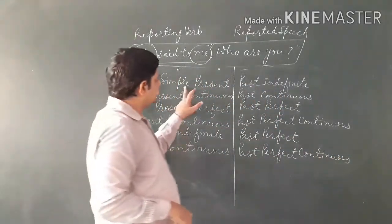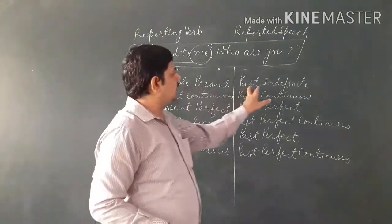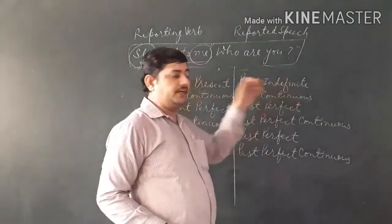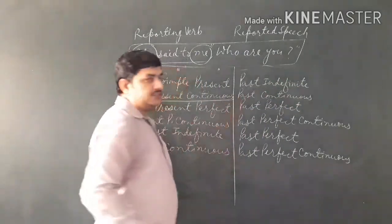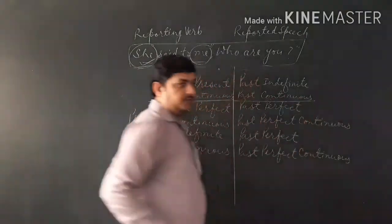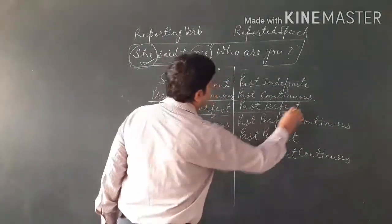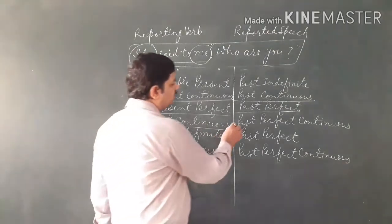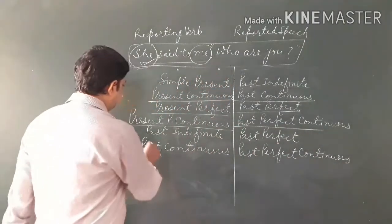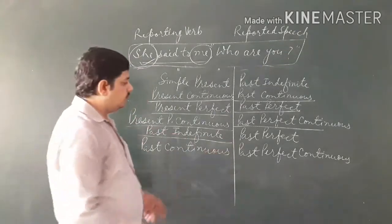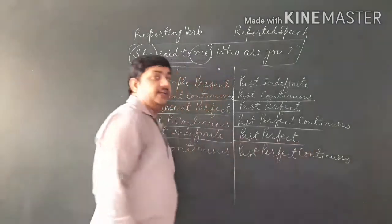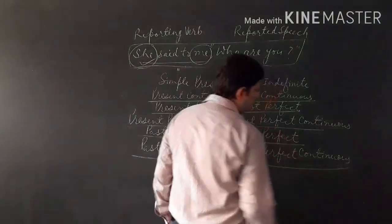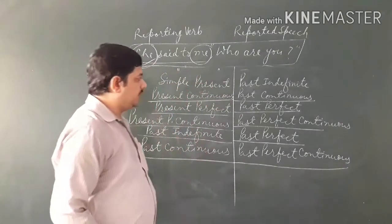So quickly: simple present converts to past form (second form). Present continuous converts to past continuous. Present perfect — 'has/have' — converts to past perfect — 'had'. Simple past, which is second form, converts to past perfect — 'had' plus past participle. Past continuous converts to past perfect continuous — 'had been' plus first form with '-ing'.